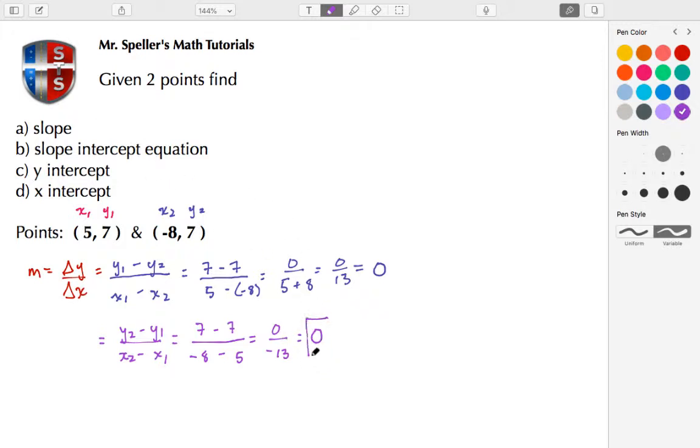And this here is part A. All right, now let's move on to part B, which is the slope-intercept equation. So here we're going to start off by using the point-slope formula.